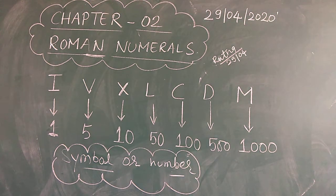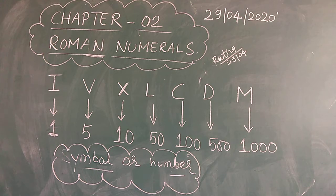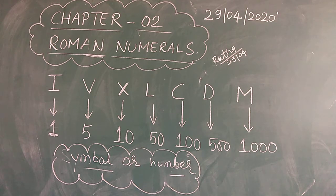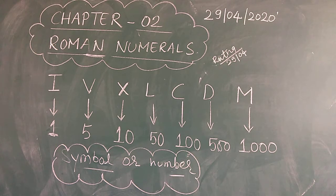Roman numerals — numerals means symbols or numbers which represent or stand for a number. We have numbers 1, 5, 10, 50, 100, 500, 1000, and we have these symbols to represent them. To read, write and learn Roman numerals and their system, we need to understand some rules.